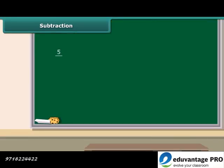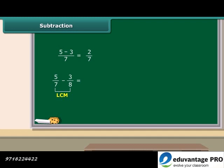Like addition, for subtraction when the denominators are the same, we just subtract the numerators and keep the denominator the same. If the denominators are not the same, we find the LCM of the denominators, then find the equivalent rational numbers of the given rational numbers with this LCM as the denominator, and then subtract the two rational numbers.